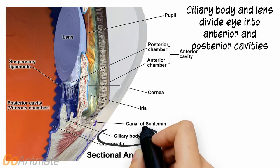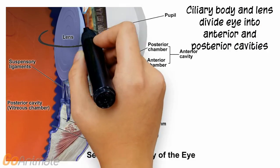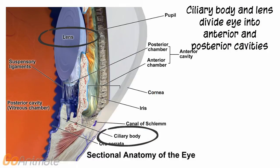The inner tunic includes the retina, which contains light receptors or photoreceptors. The anterior portion of the eye contains the anterior cavity. The lens and ciliary body divide the eye into anterior and posterior cavities.